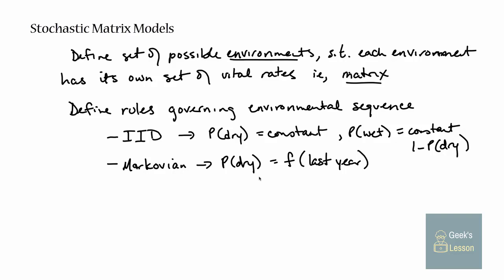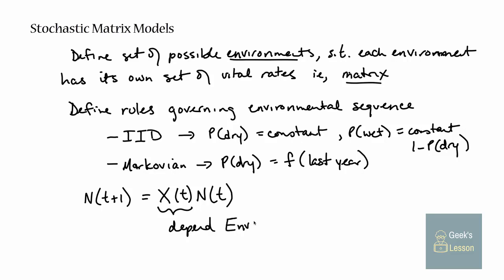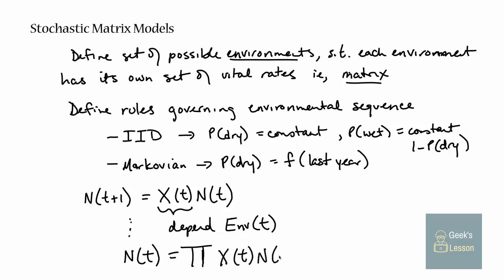No matter what rules you use to decide how your environment is variable, the guts of the model is always the same: n at time t+1, where n is your vector of individuals in each stage or age class, is projected forward based on some matrix of vital rates times the population vector at that time. The matrix you use, X at t, depends on the environment you drew at t. After lots of time steps, n at t is actually just a big product of all of the X at t matrices times n0 - the product from i=1 to t.